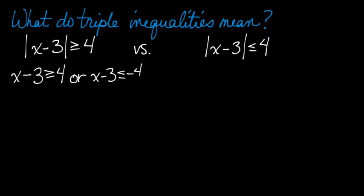Your textbook will tell you that for greater than or equal to or greater than type inequalities, what you're supposed to do is write two different inequalities without the bars, and then write the word or in between. But on the other hand, for less than or less than or equal to, you get to write a triple inequality.